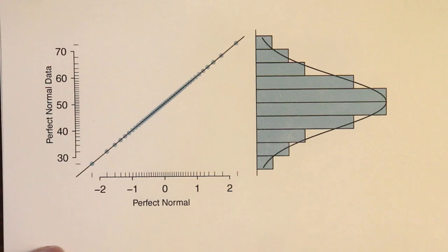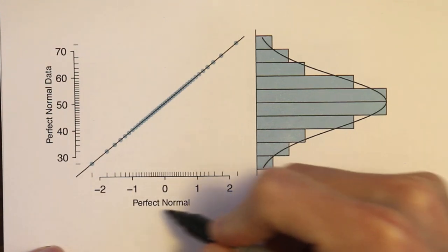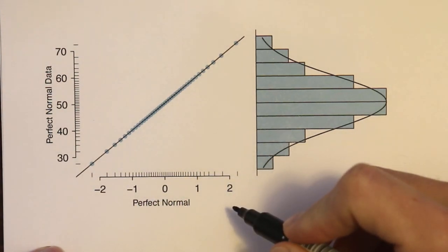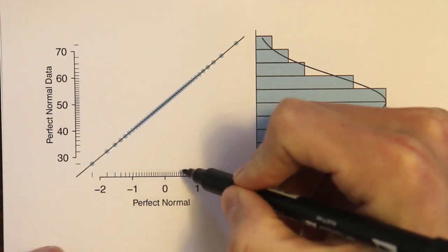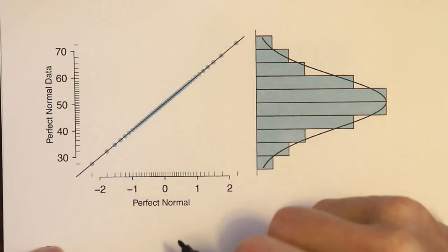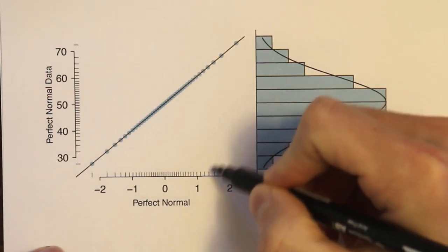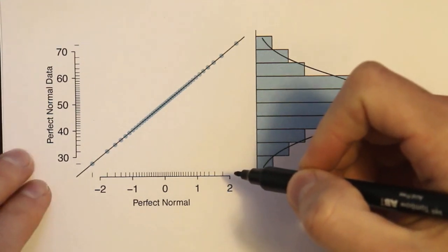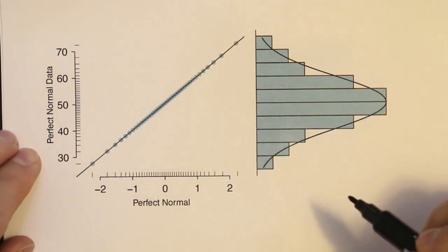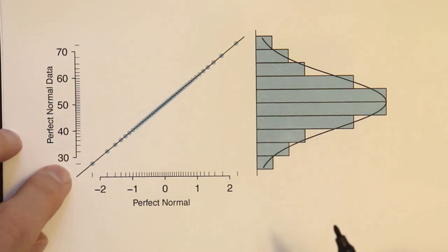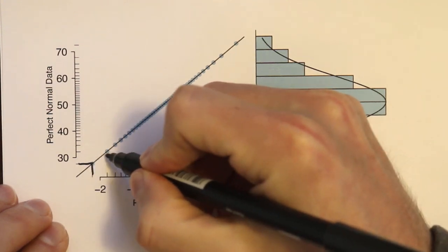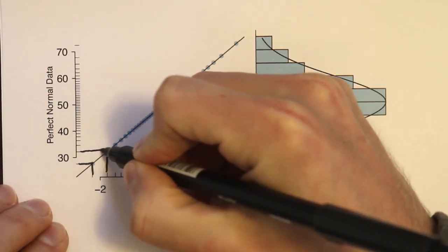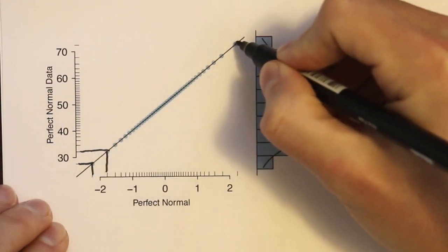The plot on the left is the new one — the normal probability plot. There are two main components. In the horizontal direction, we think about observations that would be perfectly normally distributed, with higher density in the middle corresponding to the peak of the normal distribution, getting thinner in the tails. If our data set were perfectly normally distributed, we'd see something very similar, and when we match up the perfect normal data set with our actual data set, these points would fall along a perfect straight line.